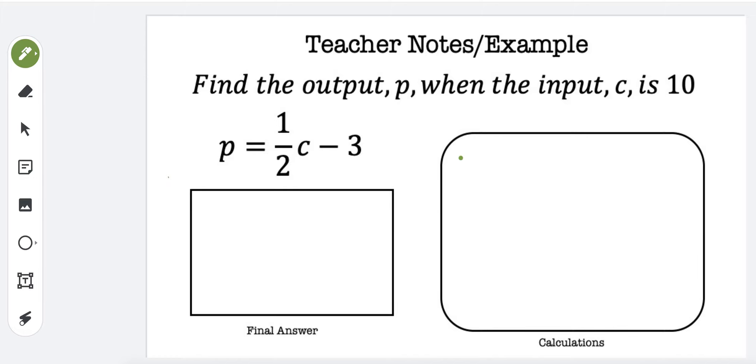And let's write here. So it's going to be P equals 1 half times 10, which I'm going to write as 10 over 1, and then finally the minus 3 after that.